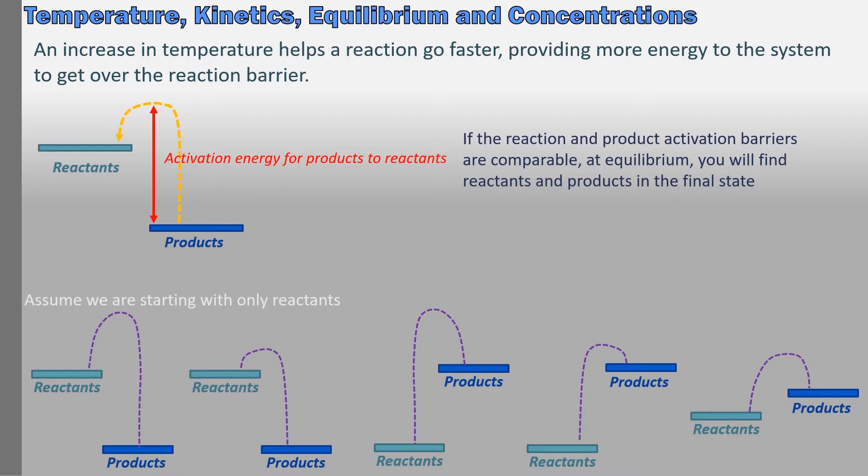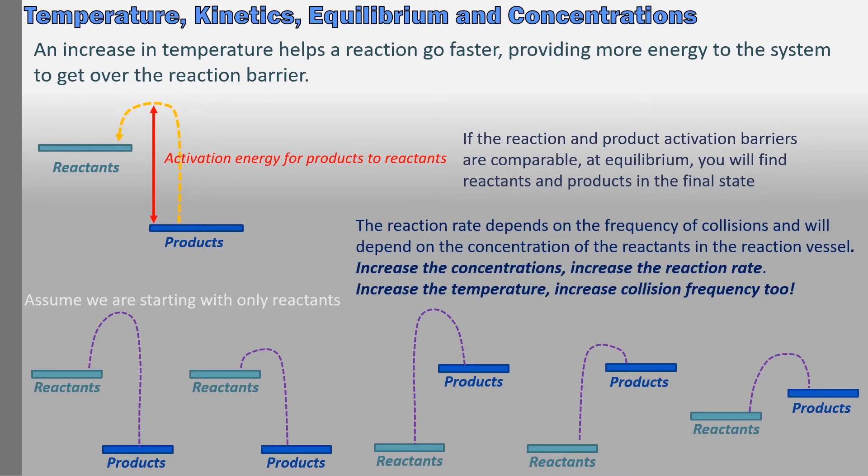One last thing to consider in kinetics is the importance of the concentrations of the reactants and products in determining the result of the reaction. A reaction can only occur if the reactants find each other in a collision. So, it makes sense that the reaction rate depends on the frequency of the collisions and will be dependent on the concentration of the reactants in the reaction vessel. If there is an increase in the concentrations, there will be an increase in the rate of the reaction. Once the collision occurs, does it have enough energy in the collision and have the right orientation to get over the energy barrier? Well, you first have to have the collision before we can answer that question.